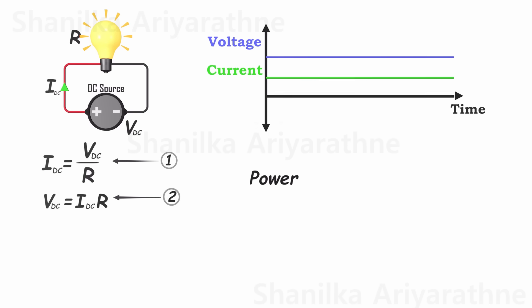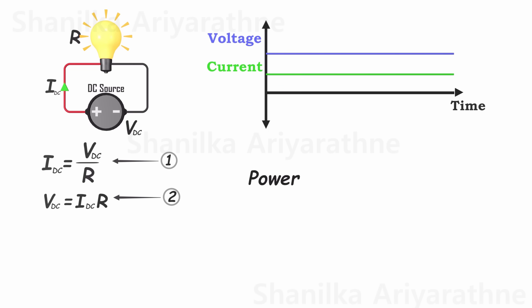Therefore, to determine the power consumption of the bulb, we simply multiply the voltage by the current. Simple, right? This represents our third equation.